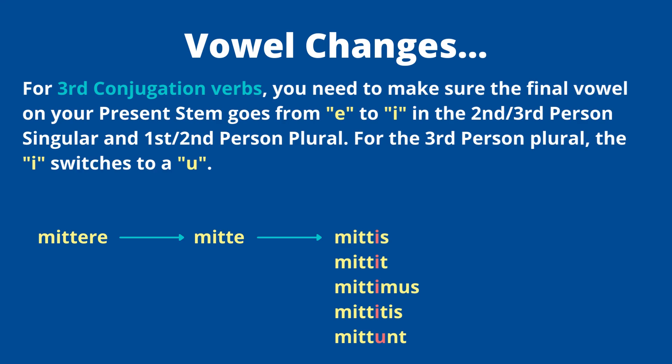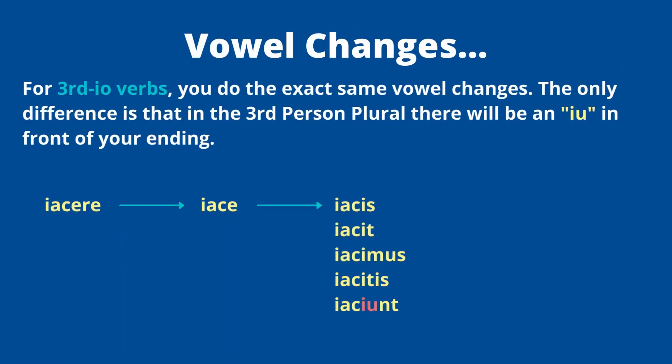The next thing to consider is third -io verbs. These are verbs where the infinitive is a short 'e-re,' but the first person singular ends in '-io.' An example is 'iacio, iacere' — a third -io verb. You do the same vowel flip as with third conjugation, but the difference is that the third person plural ('they') form has '-iunt' in front of the '-nt,' sneaking that 'i' back in. So from 'iacere,' dropping '-re' gives 'iace'; flip 'e' to 'i' for most forms; then for 'they,' it's 'iaciunt' — i-u-n-t.